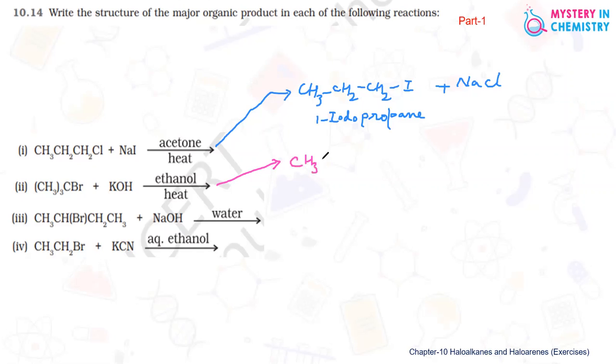So CH3, alpha beta elimination reaction and by this double bond formation. So this is the major product which is 2-methylpropene, and with this minor products will be KBr and water.